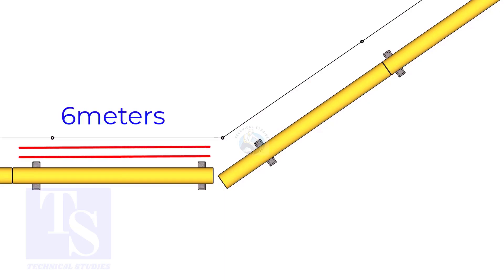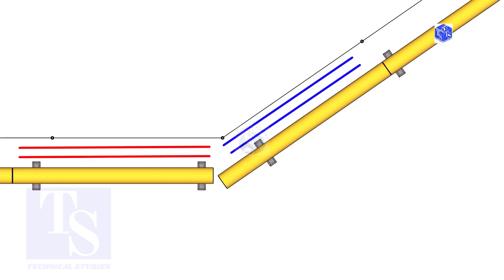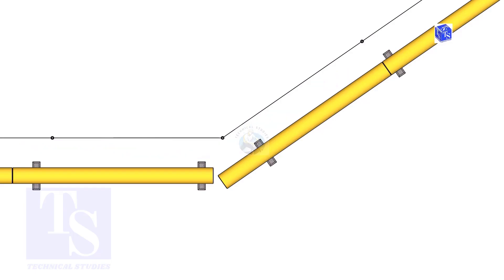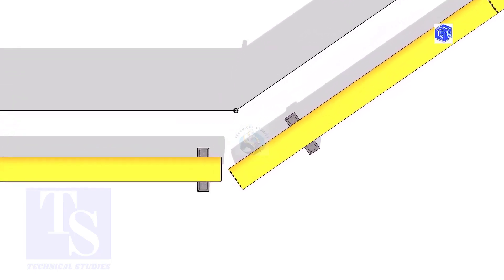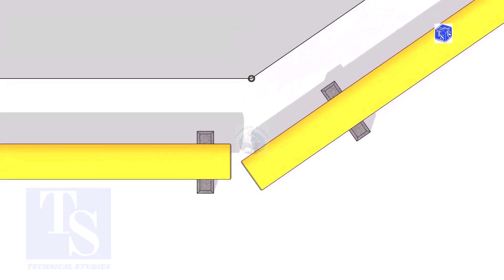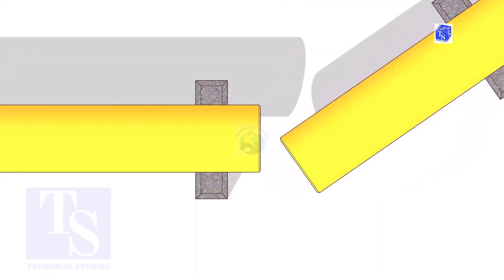The pipe shall be parallel to the fencing — not necessarily the entire length, but at least 6 meters on both sides. It is not necessary that the center lines of both pipes are in a line.